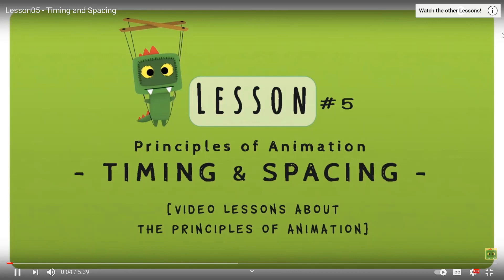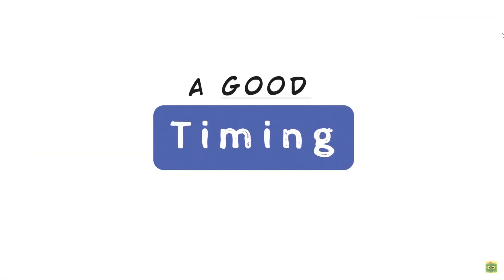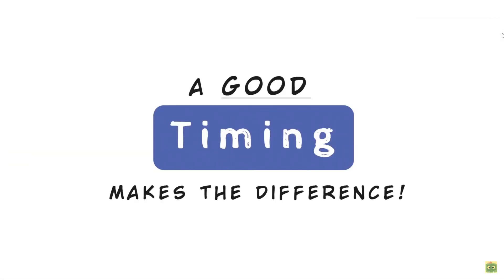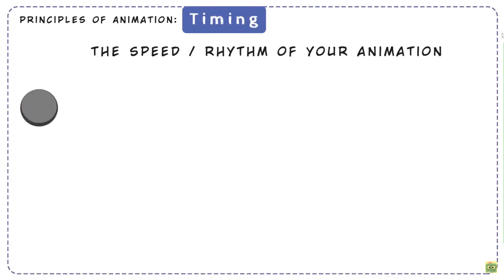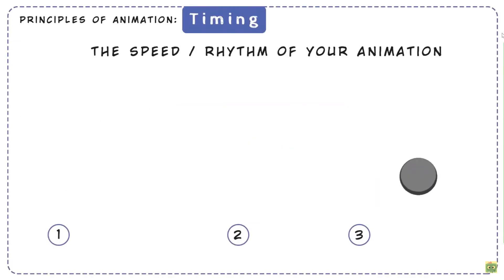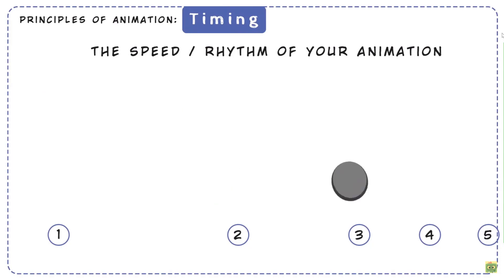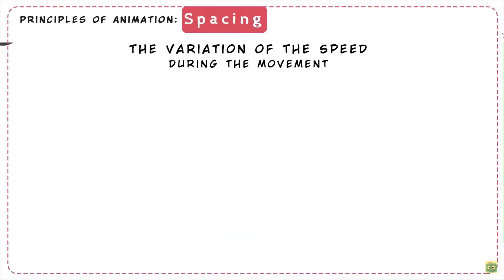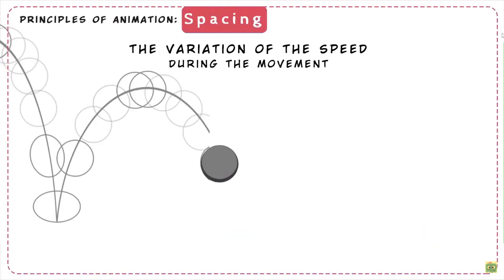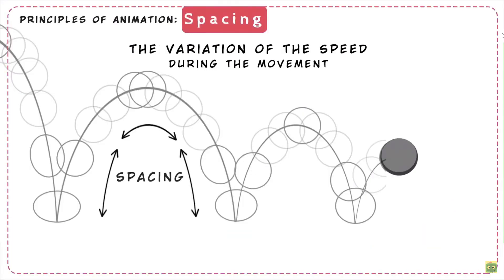The main principle is timing and spacing. Timing makes the difference and can really give an edge to your animation. The timing is the speed and the rhythm of your shot — how many frames you use to make a movement — and the spacing is the variation of the speed during that movement.